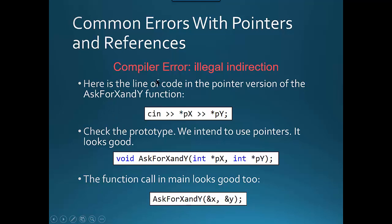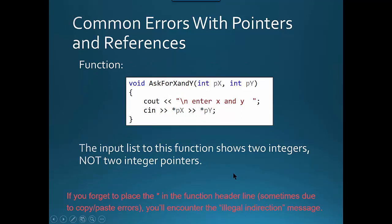Another error you can get is the compiler error 'illegal indirection'. Let's say we're trying to cin into the dereferenced pointers for px and py. You have a good function call where you're passing the address. But what you might not have done is when you defined the function, you might have forgotten to put the asterisk. That's when you get that illegal indirection error.